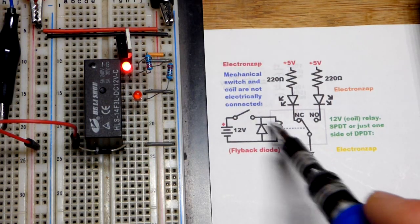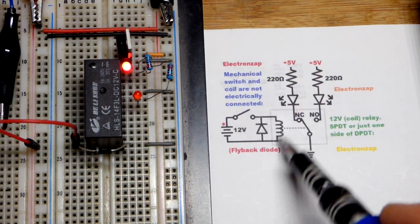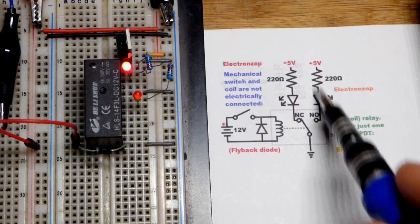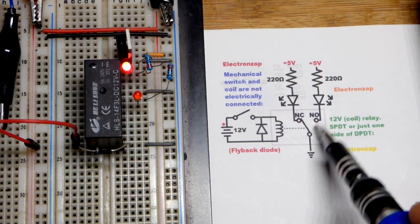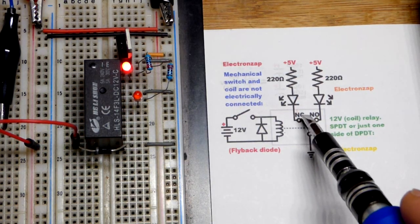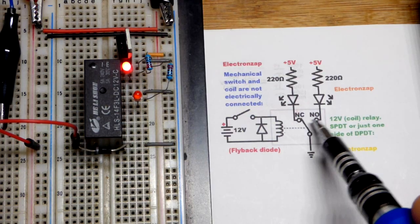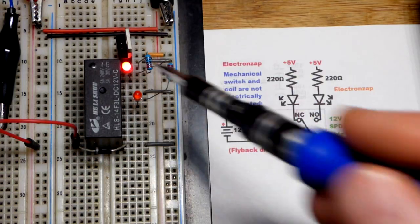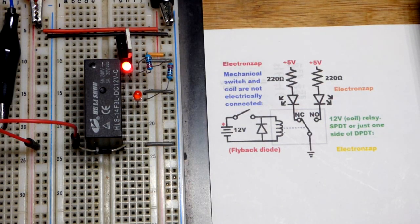But now we energized the coil, I closed this switch, we energized that coil. It pushed that switch over to the normally open. Normally open means the same as normally off. You can see we got an opening there. It's off, that's in the normal spot. But now we forced the switch to go over there. So now it's connected and that LED can light up.